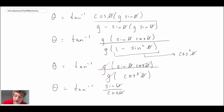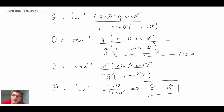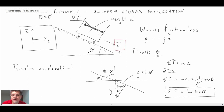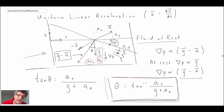After simplification, a cosine cancels with cosine squared phi, leaving theta equals inverse tan of sine phi over cosine phi, which is the tangent of phi. Consequently, theta equals phi. This is a somewhat surprising result — it tells us that the angle of the fluid free surface equals the incline angle, meaning the free surface remains parallel to the inclined surface under uniform linear acceleration.